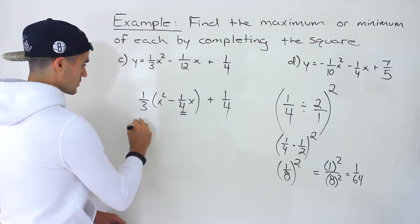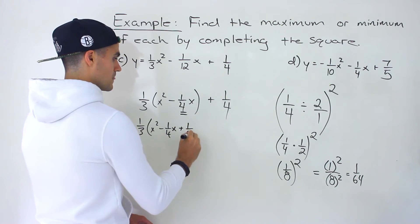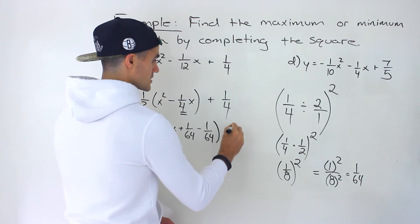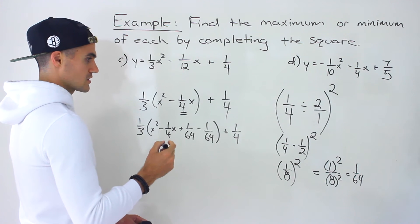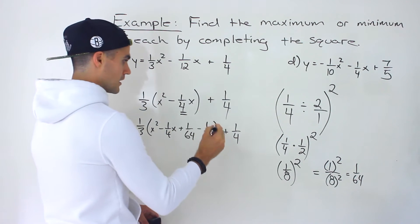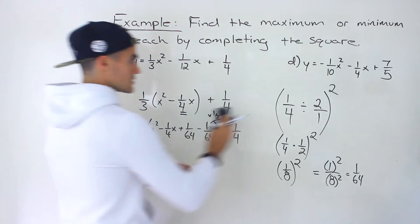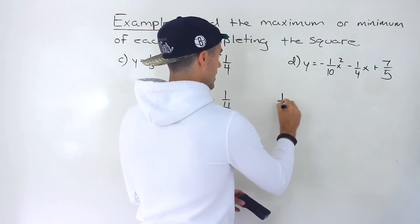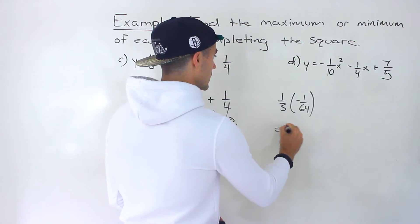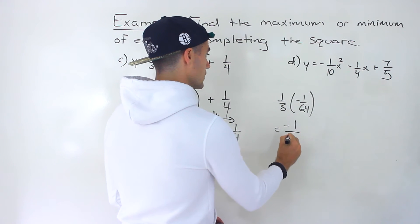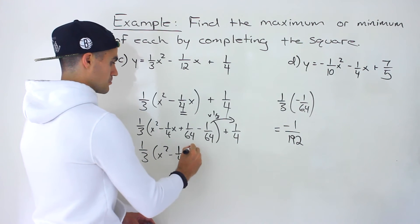So one-over-64 goes in: one-third times x² minus one-quarter x plus one-over-64 minus one-over-64, then plus one-quarter at the end. Now we take the negative one-over-64 outside the bracket and multiply by one-third. On the side: one-third times negative one-over-64 — multiply numerators and denominators — gives negative one-over-192.